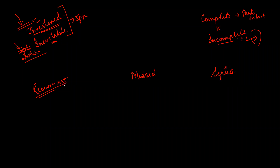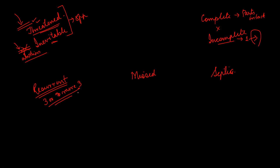Recurrent abortion means three or more than three abortions or pregnancy losses occurring. That is called recurrent abortion. Missed abortion means fetal death has already occurred, but it has not been detected. That is a missed abortion.